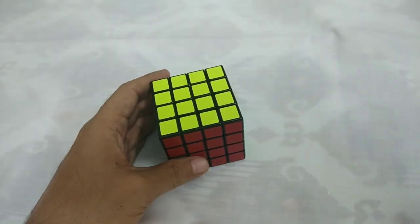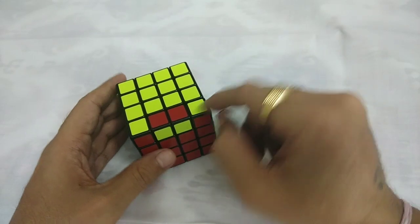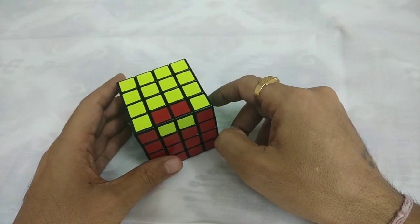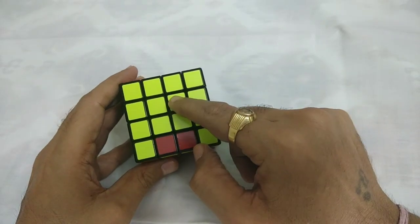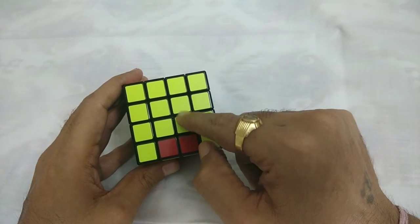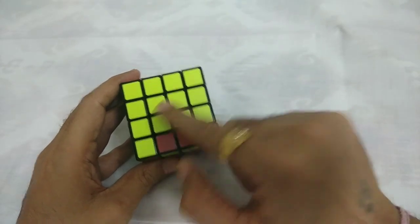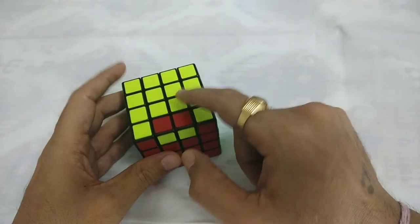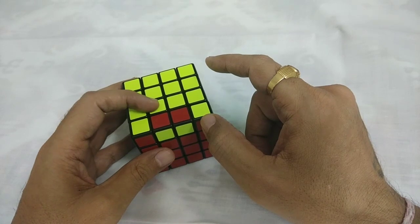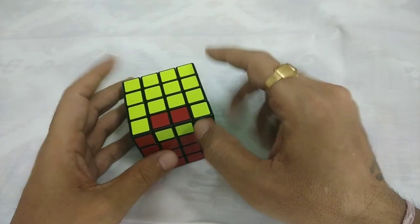I will just show you second method. So now I will show you second method. That is called Red Bull method. So it will move this middle R and middle L. So whenever I say 2R, so this middle layer. And L or 2L, so this middle layer.